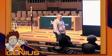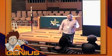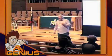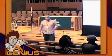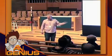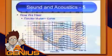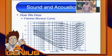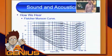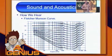The Fletcher-Munson Curve was created by Bell Labs in the 30s, and this is it. What they were trying to do was figure out how to transmit a phone call cheaply. So they said, we've got to figure out how people hear sound.